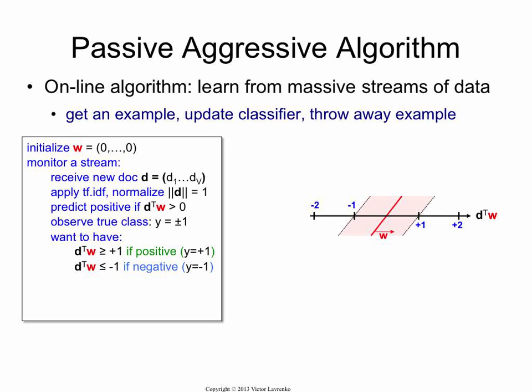So we want all the positives to be here, all the negatives to be there. And we really want nothing in that buffer zone between minus 1 and plus 1. So this axis is the dot product. It's the similarity between the document and the weight vector. That's our buffer zone.